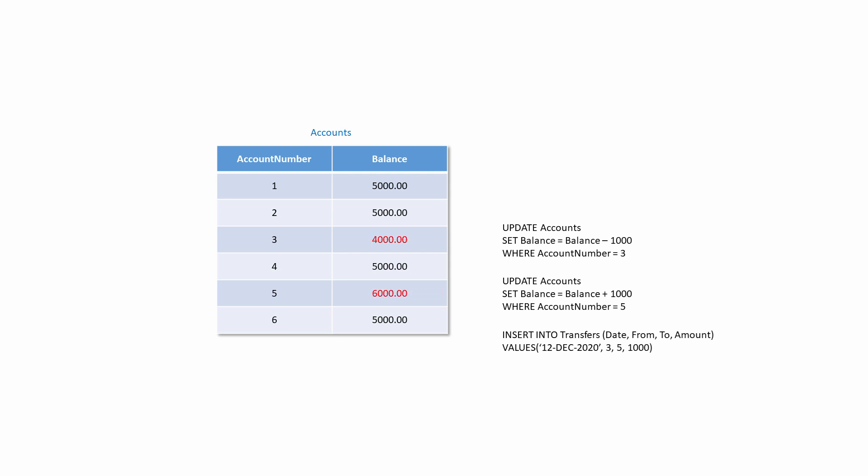Let's be careful about the way we use the word transaction. A bank's database would no doubt store detailed records of every deposit and every withdrawal that has ever taken place, and of course every transference of money between accounts. Exchanges of money like these are commonly referred to as transactions — indeed, when you buy something from a shop with cash, money is exchanged, and this is also commonly referred to as a transaction. But in database terminology, the word transaction means an indivisible unit of work. This means that the term transaction can be applied to all sorts of database applications which don't involve money at all.